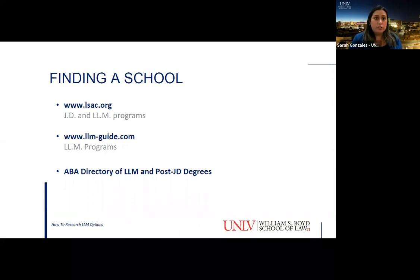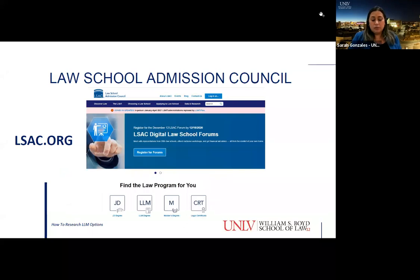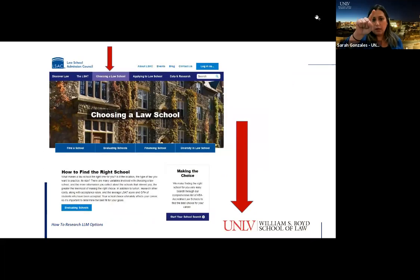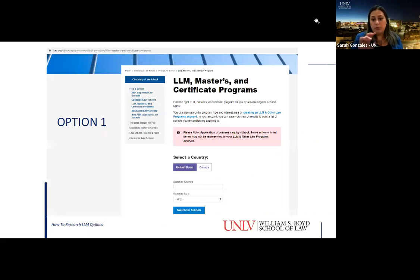One of the larger resources I recommend is to go directly to the source. All ABA-accredited schools have to apply for ABA approval, and the ABA compiles a list of all those approved programs on their website. At LSAC.org, go to the 'Choosing a Law School' toggle, scroll to the bottom, and find the LLM and other programs link. You can then put in keywords or states to search. Some schools offer an LLM, some a master's or certificate, so make sure it has that LLM notation.